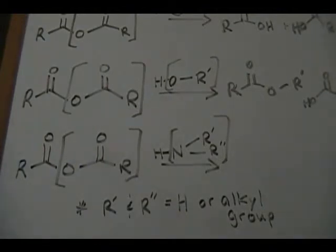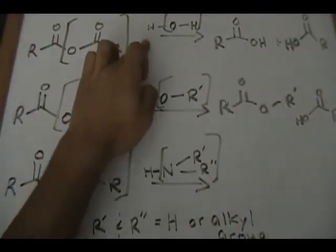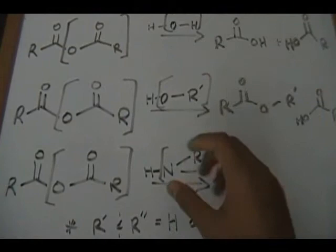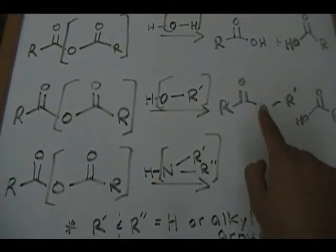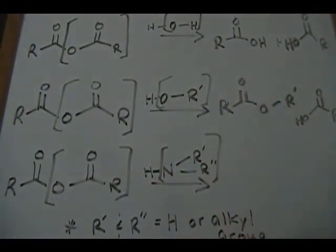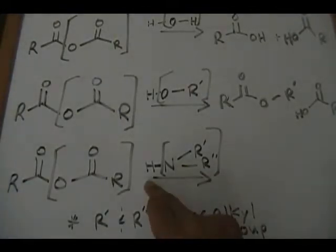The final reaction: a symmetrical anhydride reacting with an amine. One thing to realize is that through each and every one of these reactions, you lose a hydrogen from the reagent. In the first reaction with water, only the OH replaces the leaving group — you lose that H. With the alcohol, there's no H hanging off the oxygen in your ester product. The same applies here: when you draw the amide product, that H from the amine is not going to be there — you lose one H.